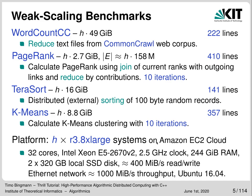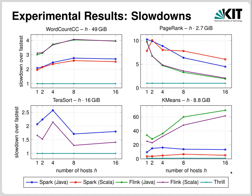The benchmarks were done on a cluster of relatively beefy machines in the Amazon EC2 cloud. These machines had 32 cores, lots of RAM, local SSDs and a virtualized network with up to 1 GB throughput. And here are the results.